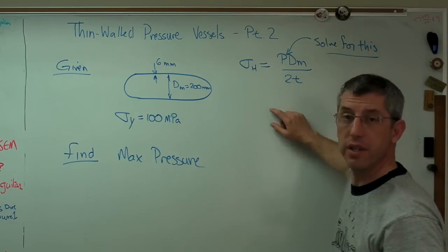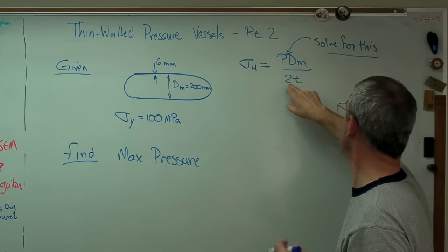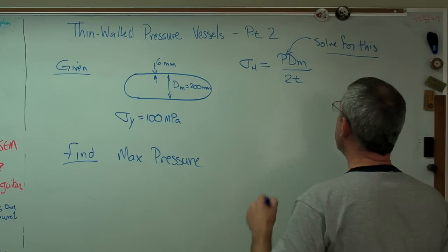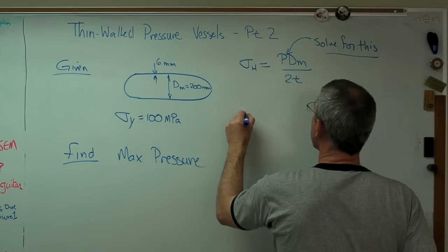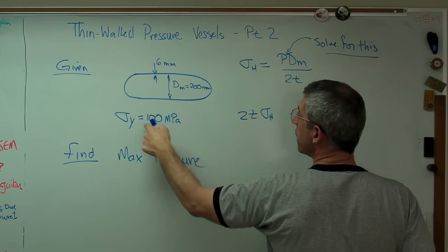Because we know all these other numbers. This is given. This is 100 megapascals. That's 200 millimeters. That's just a number. And that's 6 millimeters. So let's push a few symbols around here. 2t sigma h, which is really the sigma yield, because that's the maximum stress, normal stress I can live with.